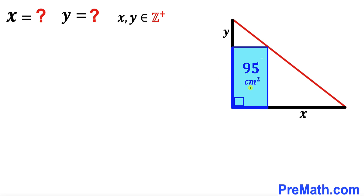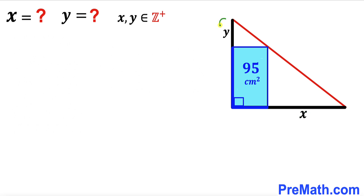Welcome to Premath. In this video we have a blue shaded rectangle fully inscribed in a right triangle, such that the area of this blue rectangle is 95 centimeters square. This horizontal distance is represented by x, while this vertical segment is y. Our task is to calculate the value of x and y, keeping in mind that x and y are positive integers.